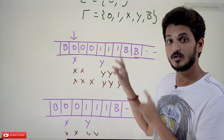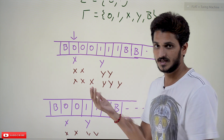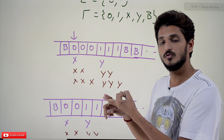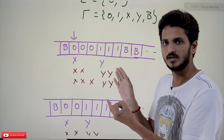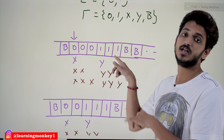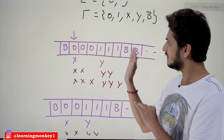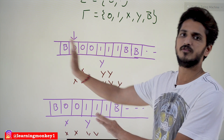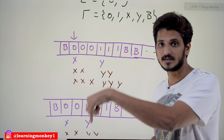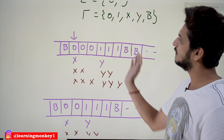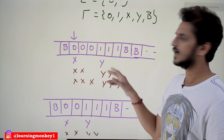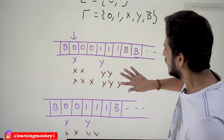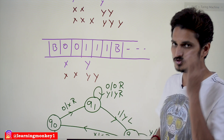The logic here is: whenever you are moving forward, you may find zeros or you may find Y's — just keep moving right. Stop only when you find a 1. Similarly, when moving back, you may find Y's or zeros — just move left until you find X. That is the logic: move front and back, converting zeros into X's and ones into Y's.